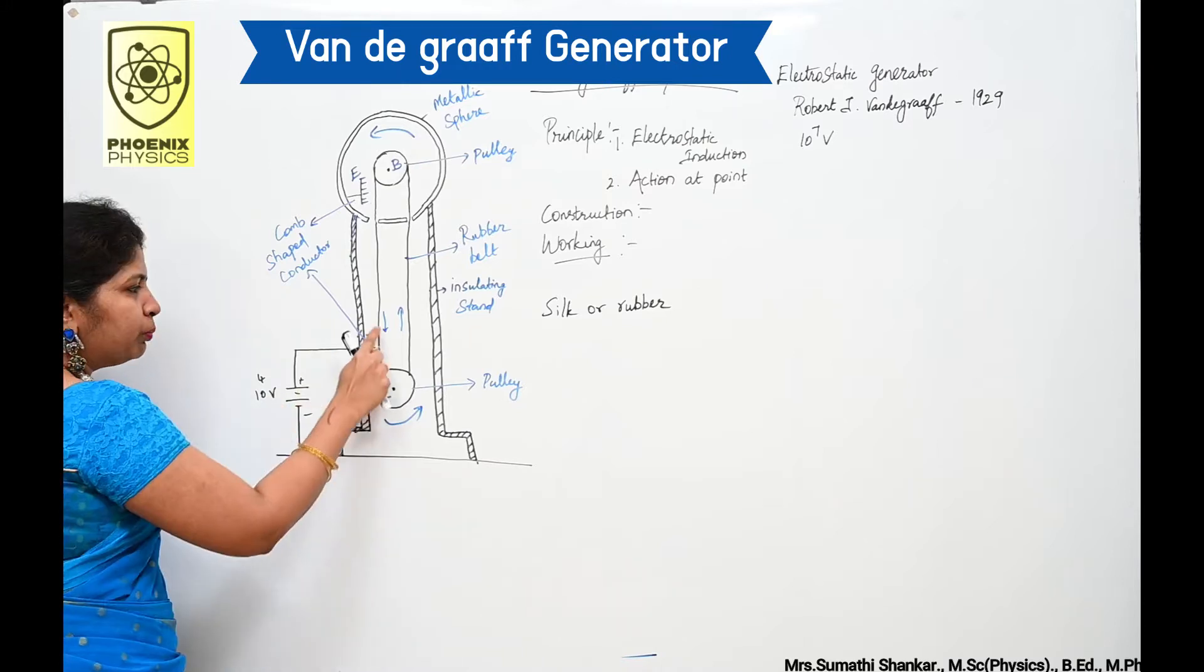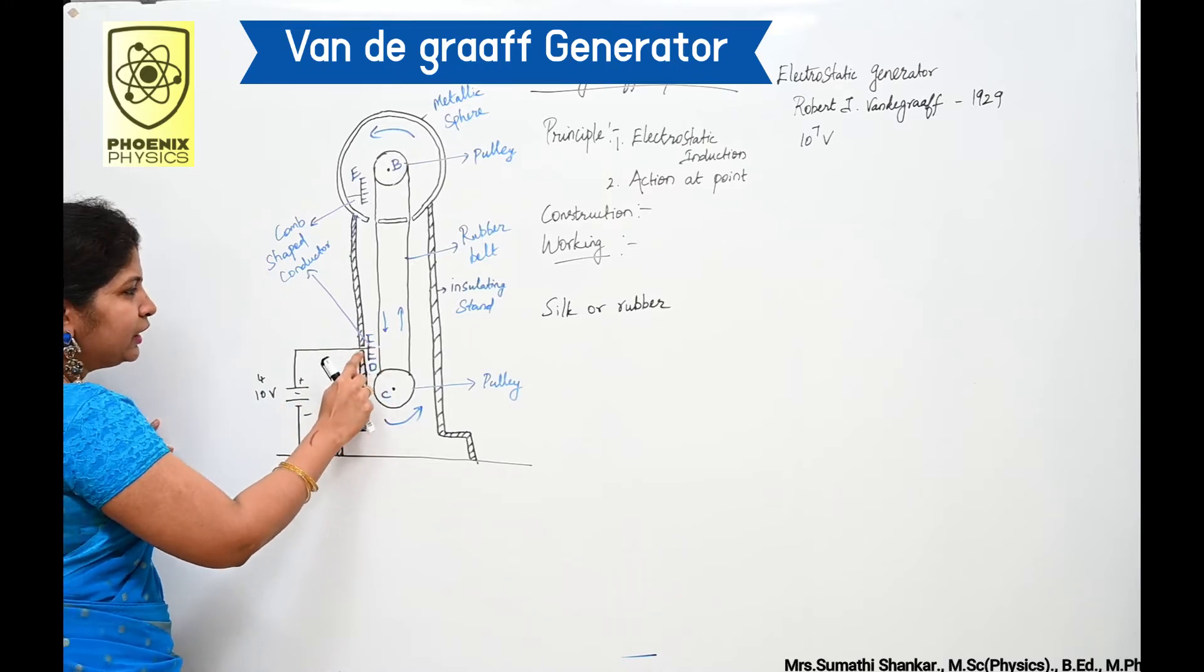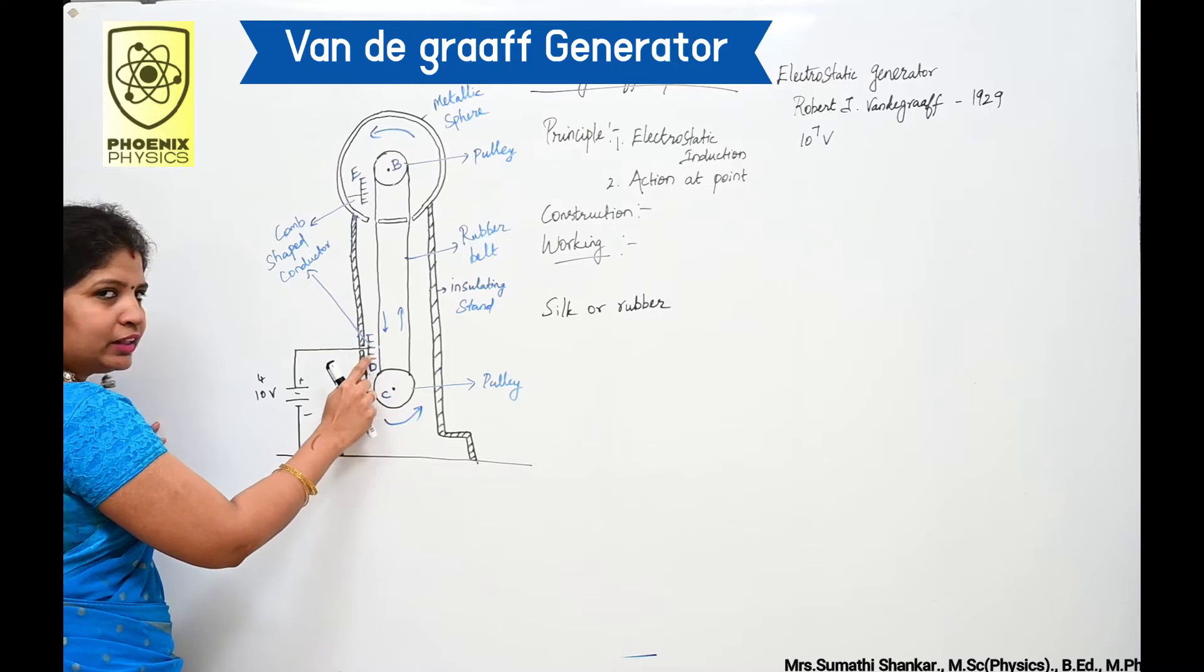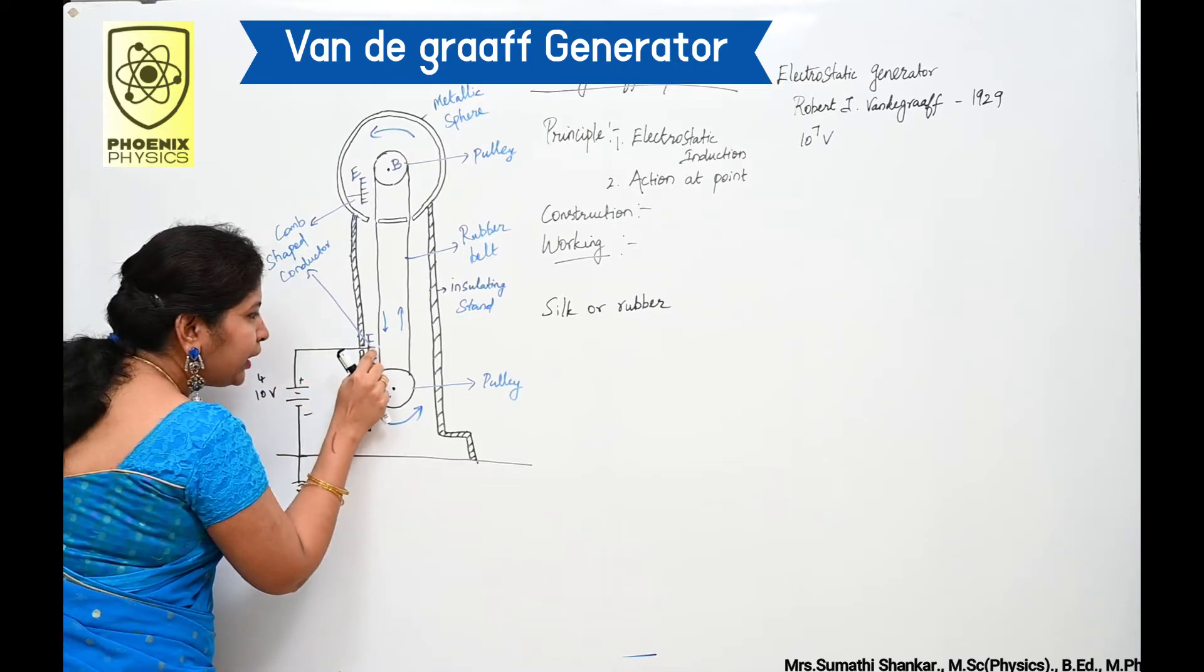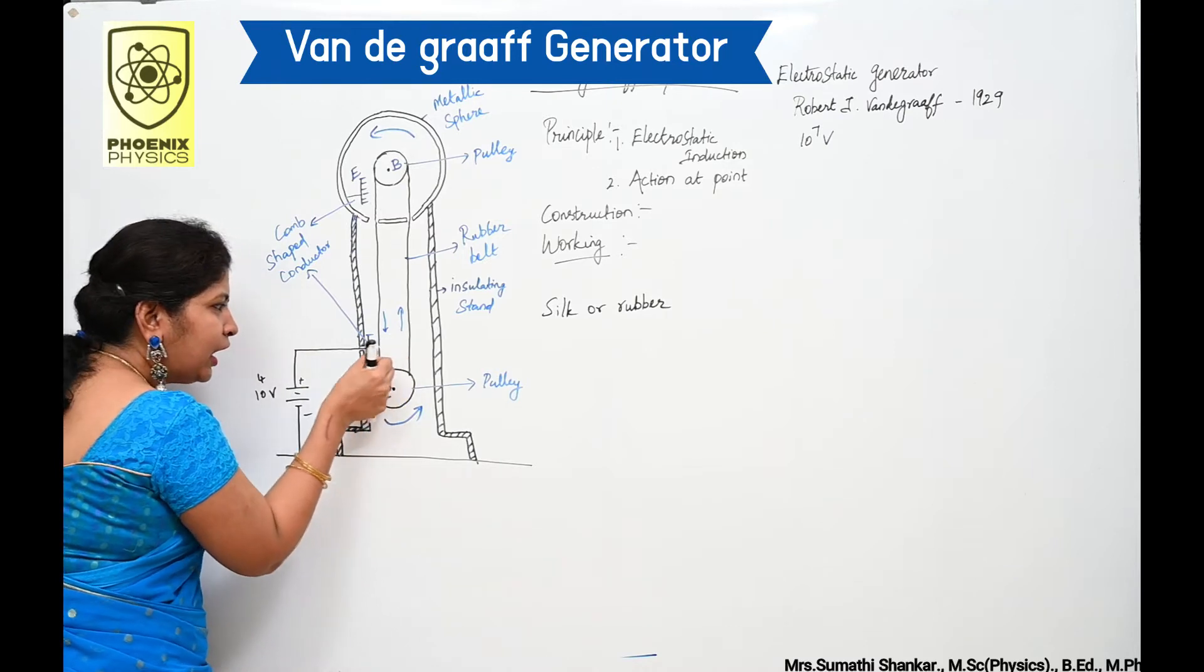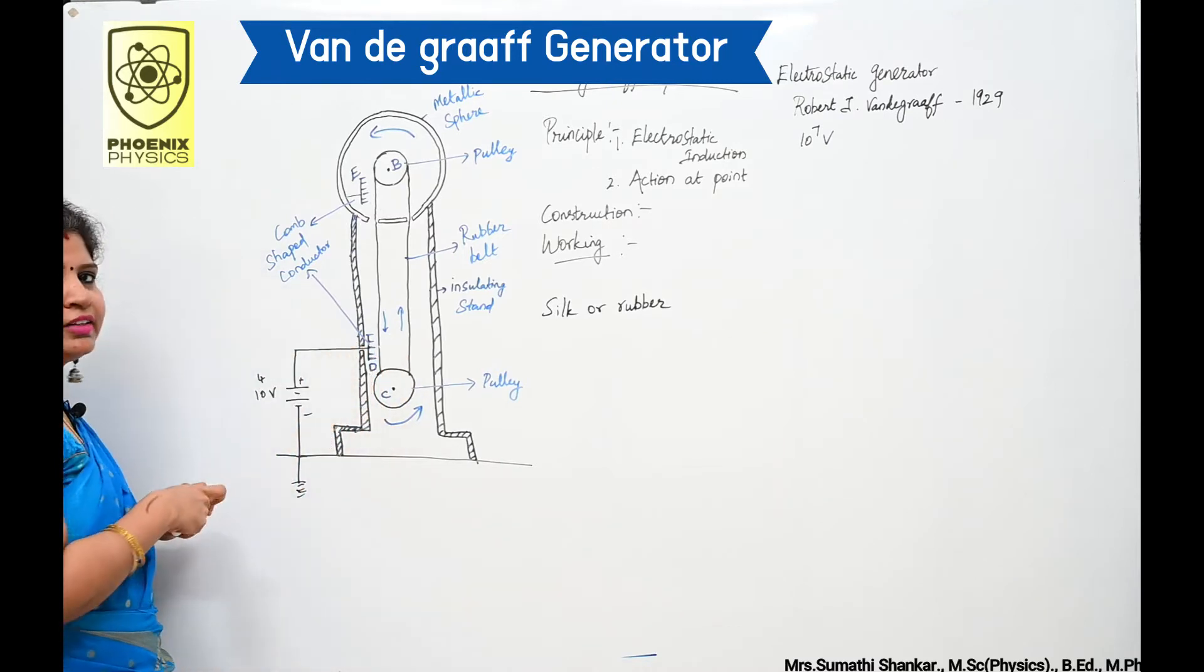Due to this voltage, high electric field is created near the comb D. Air between belt and comb gets ionized.